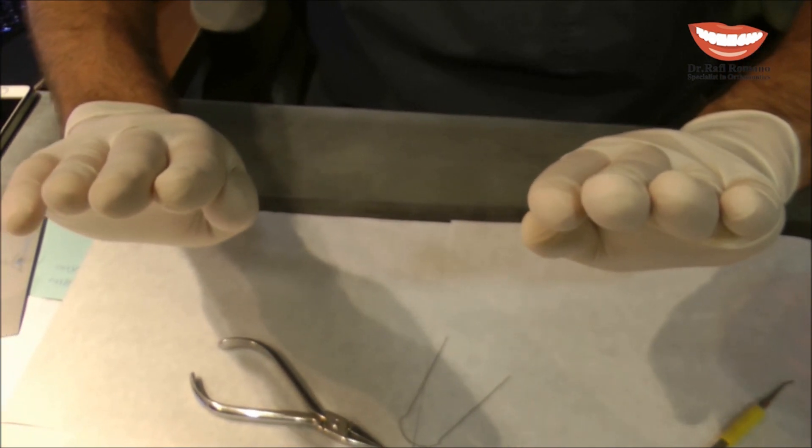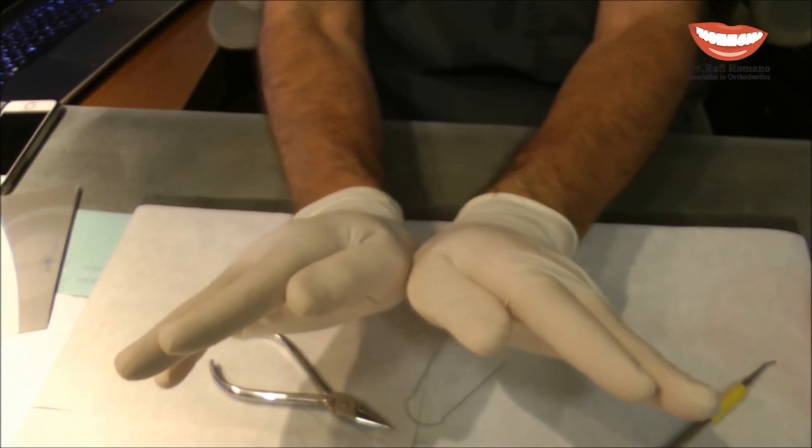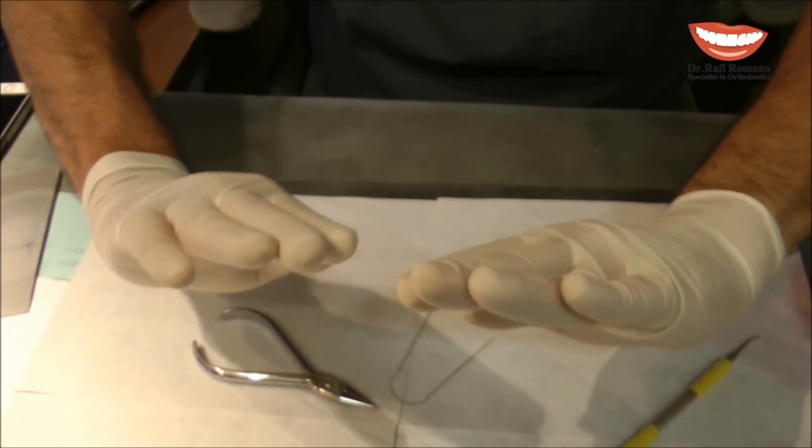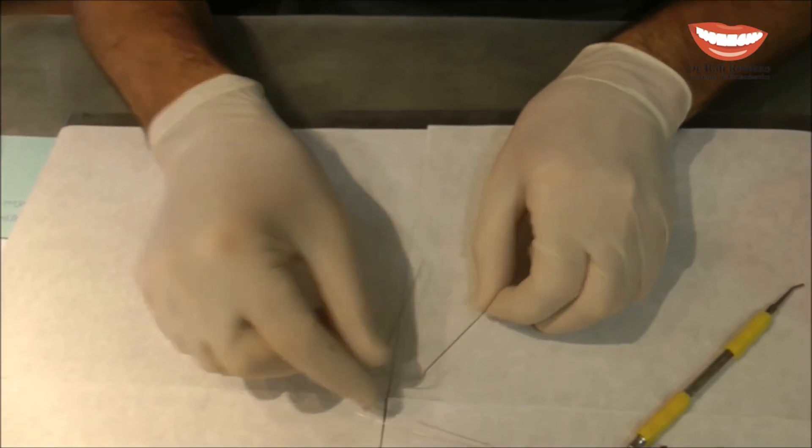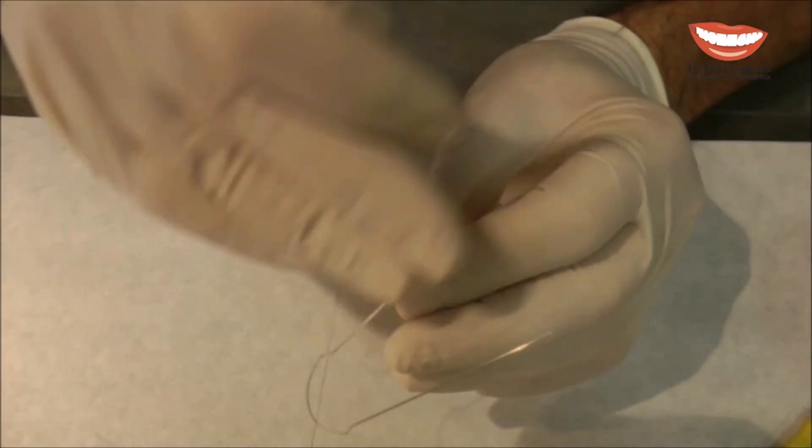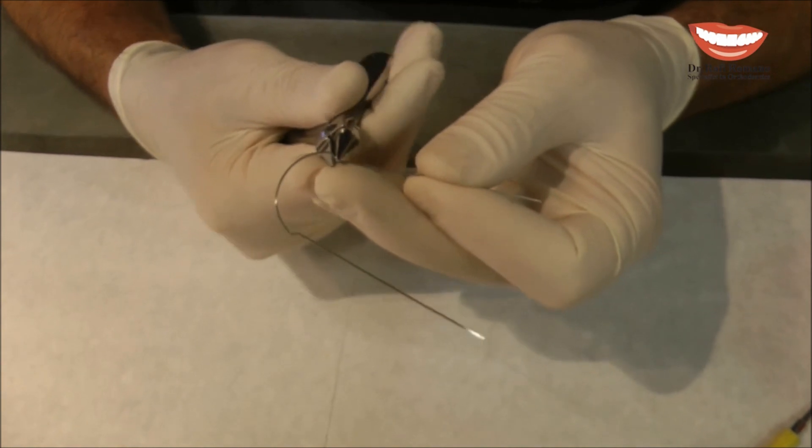We want to avoid the tendency for the teeth to tilt and that's why we will make an opposite band in the wire. So this band should be made both in the horizontal and in the vertical. So that's the way how we do it.